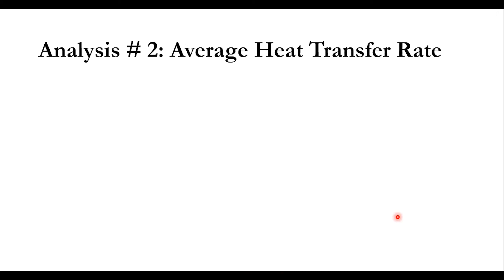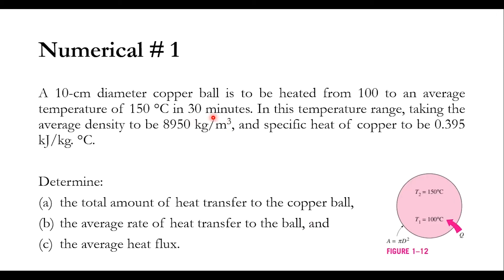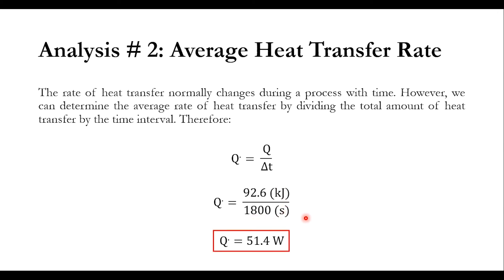Moving to the second part, the average heat transfer rate involves a factor of time delta t. We need to raise the temperature in 30 minutes as given. So Q-dot, the average heat transfer rate, equals Q divided by delta t. Using Q of 92.6 kilojoule divided by 1800 seconds (30 minutes converted), we get Q-dot equals 51.4 watt.